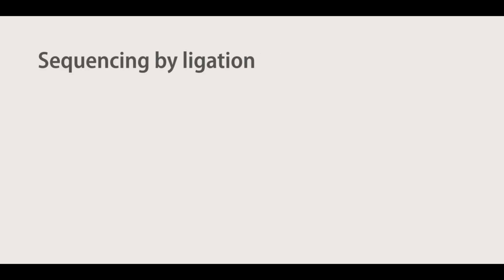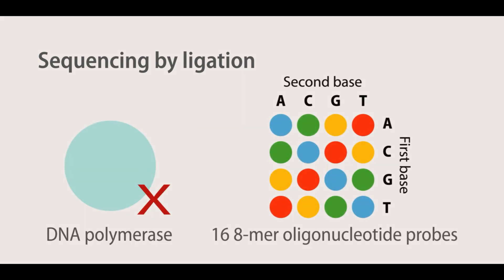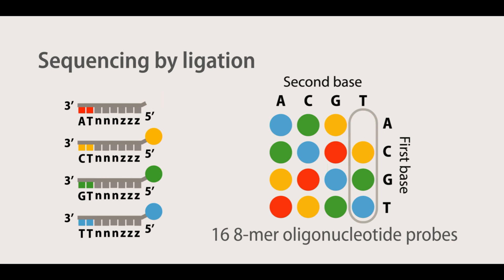Sequencing by ligation is different from the other two methods, since it does not utilize a DNA polymerase to incorporate nucleotides. Instead, it relies on 16 eight-mer oligonucleotide probes, each with one of four fluorescent dyes attached to its five-prime end that are ligated to one another.